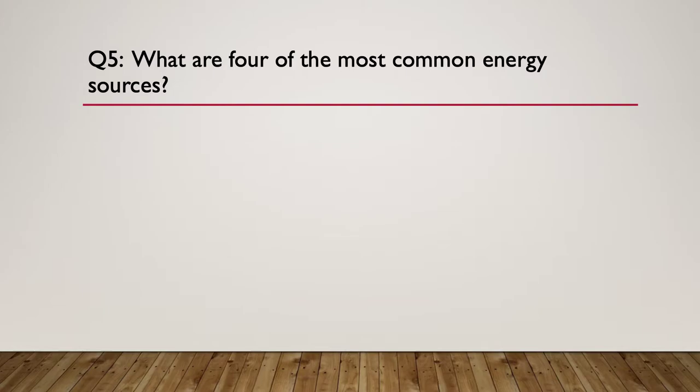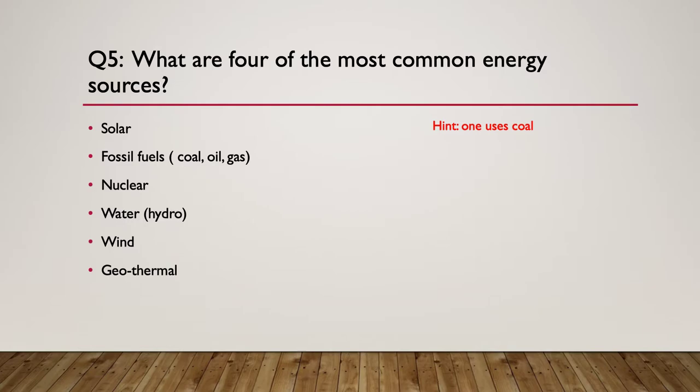Five. What are four of the most common energy sources that we use for generating electricity energy? A hint, one of these sources is coal. Here's a list of the possibilities. You could have had solar. Fossil fuels, which involves coal, oil, gas. Nuclear. Water, as in hydro, wind or geothermal. Any combination of those, if you've got four of those, you've done well.